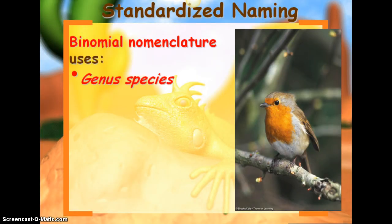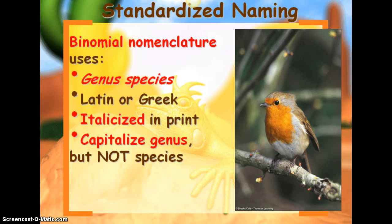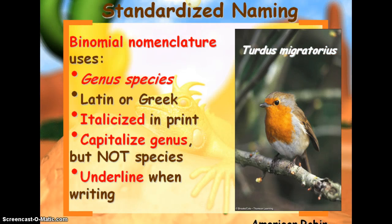It is important that you know how to write this. We write it either italicized if we are using a computer and typing it — we capitalize the genus name but not the species name. If we are writing it by hand, we underline it. That's a key thing to know. You need to know these steps and how to write the genus and species name. For example, we have the American robin, which is called Turdus migratorius — Turdus is the genus name and migratorius is the species name.